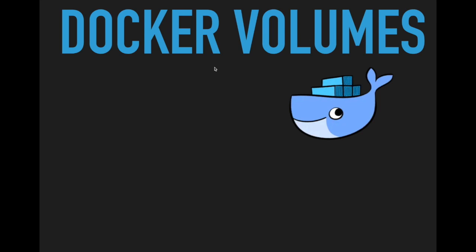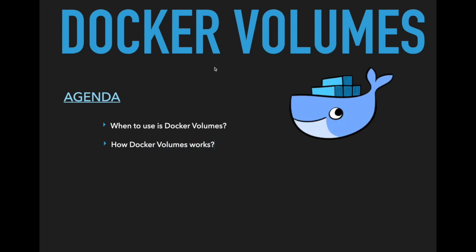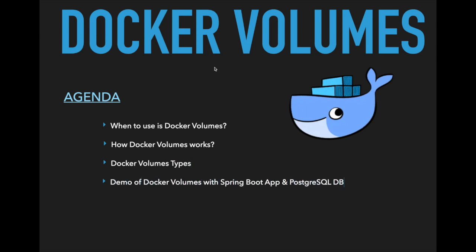Before getting into this video, look at what is the agenda for this particular session. We are going to see when we have to use Docker volumes and how Docker volumes work, what are the types of Docker volumes, and finally we are going to see a simple demo by deploying a Spring Boot application and a PostgreSQL DB as Docker containers and how we are going to utilize Docker volumes for these two containers.